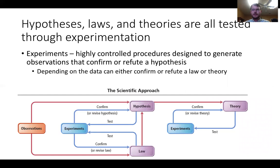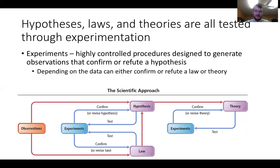Hypotheses, laws, and theories are all tested through experimentation. The knowledge we gain in science is empirical — taken through experimentation. The scientific approach is circular: you form a hypothesis, test it through experiments, and it either confirms the hypothesis or forces you to revise it, then you test again. All of this is based on observations, and you make observations through experimentation too.